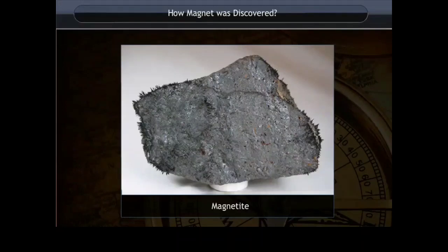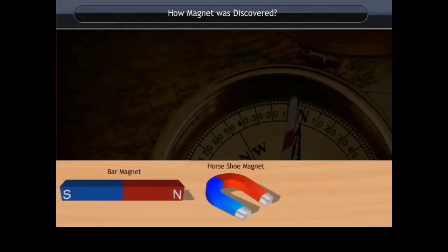Such rocks were given the name magnetite, named after that shepherd. Magnetite is composed of iron. As per the definition, any substance which can attract iron is called a magnet. This is how magnets were discovered. There are two types of magnets: naturally occurring magnets and artificial magnets. Artificial magnets are of different shapes like bar magnet, horseshoe magnet, and cylindrical magnet.